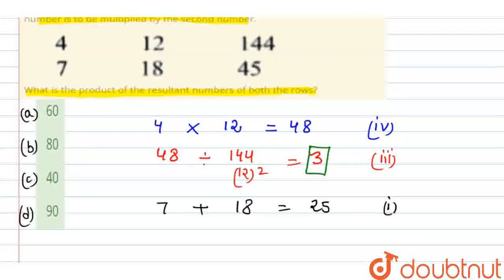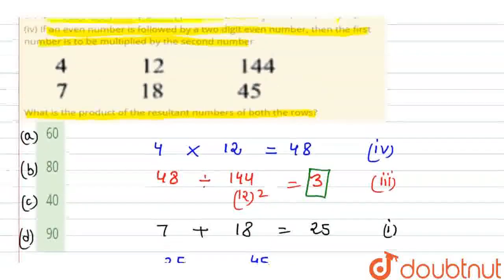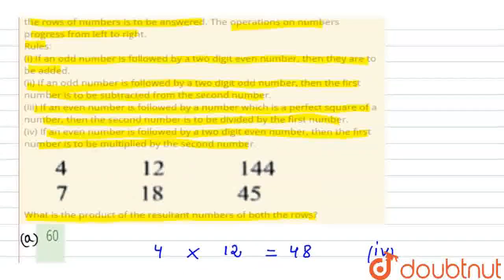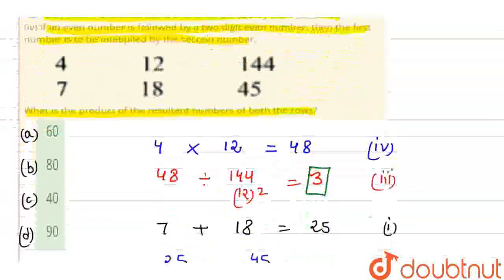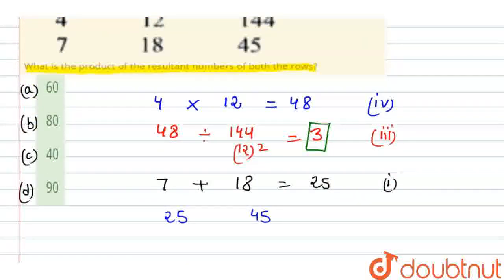Now next, if we see twenty-five and next is forty-five. Look, twenty-five and forty-five, both are odd. That means rule number second will apply. If an odd number is followed by two-digit odd number, then the first number is to be subtracted from the second number. That means forty-five minus twenty-five, how much will it be? Twenty. So the value here will be twenty according to rule second. So this will be our second row's result.